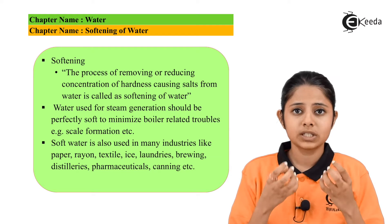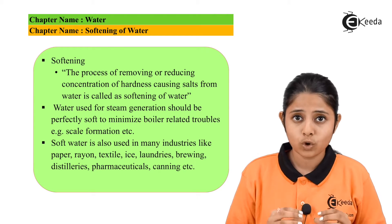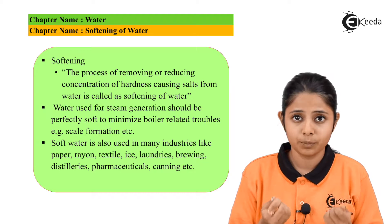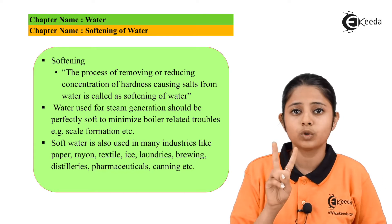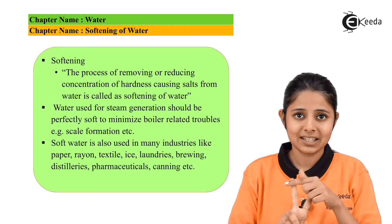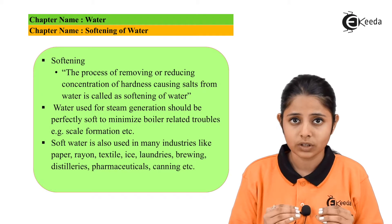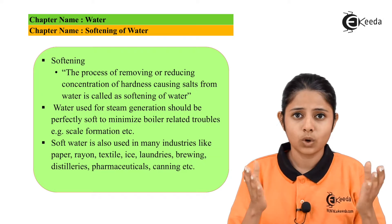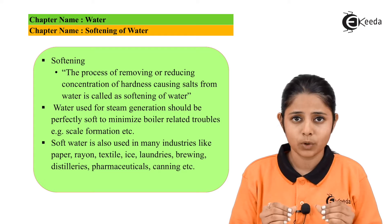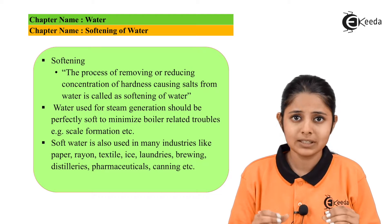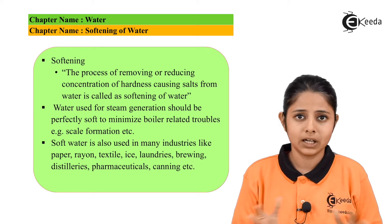Water used for steam generation should generally be soft water. If hardness-causing impurities are present in boilers, they will stick to the boilers and form scales and sludges. Scales and sludges are depositions of impurities inside our machines or boilers. Scales are hard impurities and sludges are mushy or soft impurities, but both are undesirable.